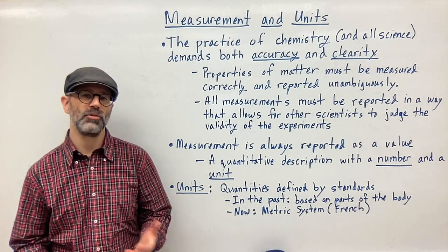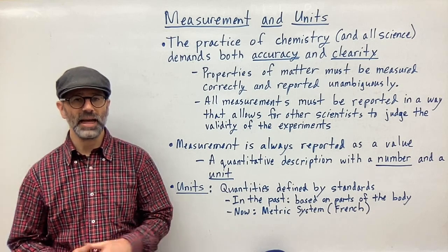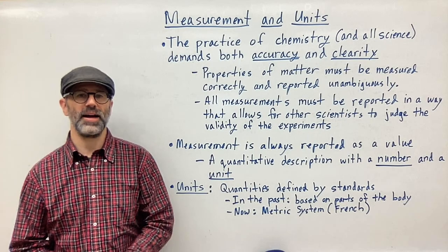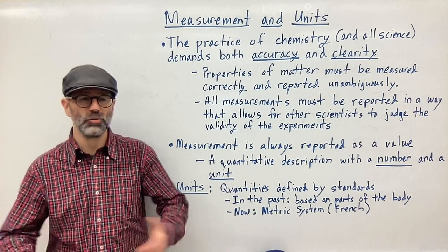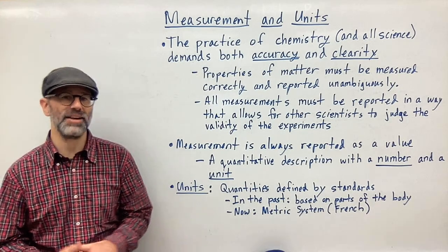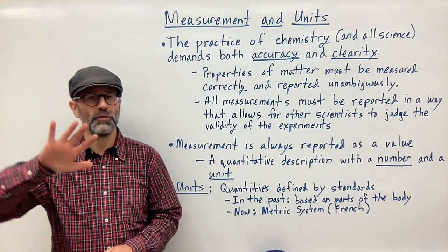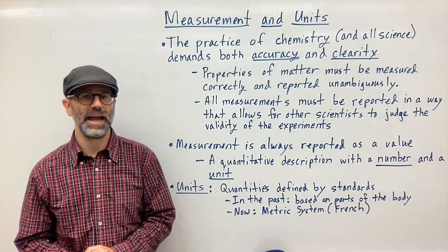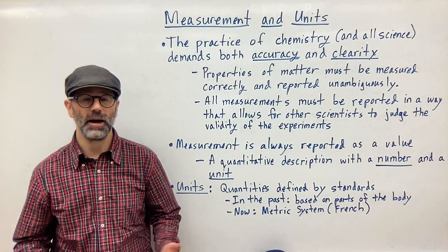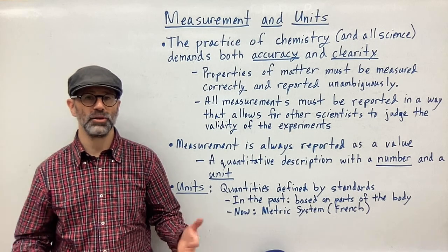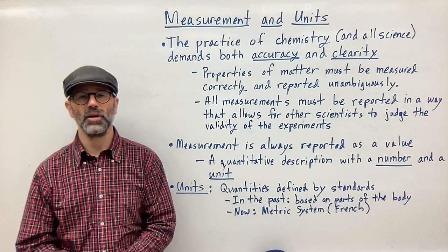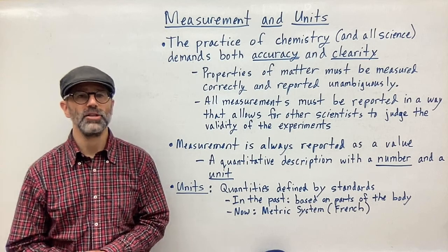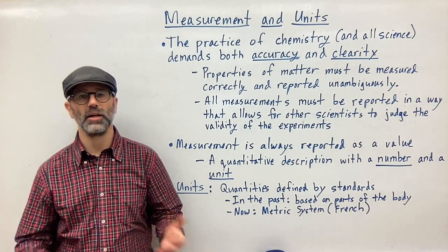In the past, units were based on body parts. For example, if I wanted to know how tall a horse was, I would talk about how many hands high it would be — measuring by the actual hand of a person. Or if we wanted to measure a table, we might use the foot. I would tell the carpenter how many feet, and he would use his foot or my foot to measure the dimensions of the table and build it.